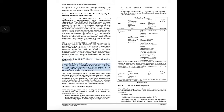Appendix B to 49 CFR 172.101 is the List of Marine Pollutants — a listing of chemicals that are toxic to marine life. For highway transportation, this list is only used for chemicals in a container with a capacity of 119 gallons or more. Any bulk packages of a marine pollutant must display the marine pollutant marking — a white triangle with a fish and an X through it. This marking must also be displayed on the outside of the vehicle, and a notation must be made on the shipping papers.